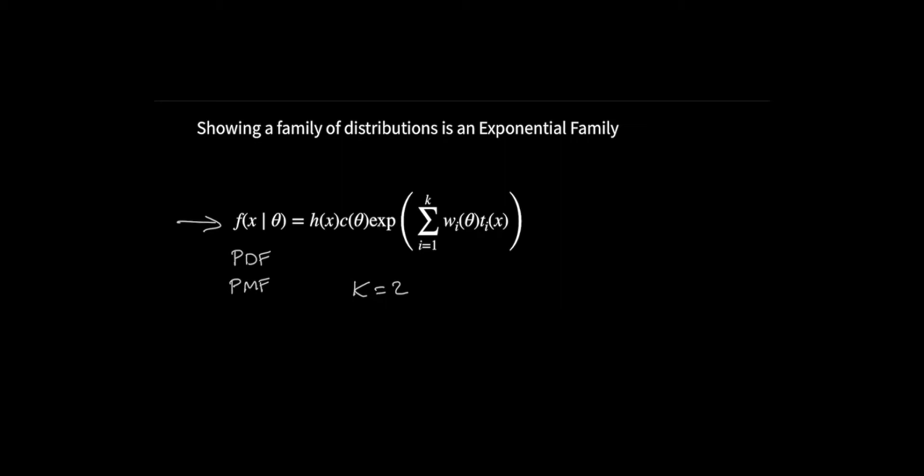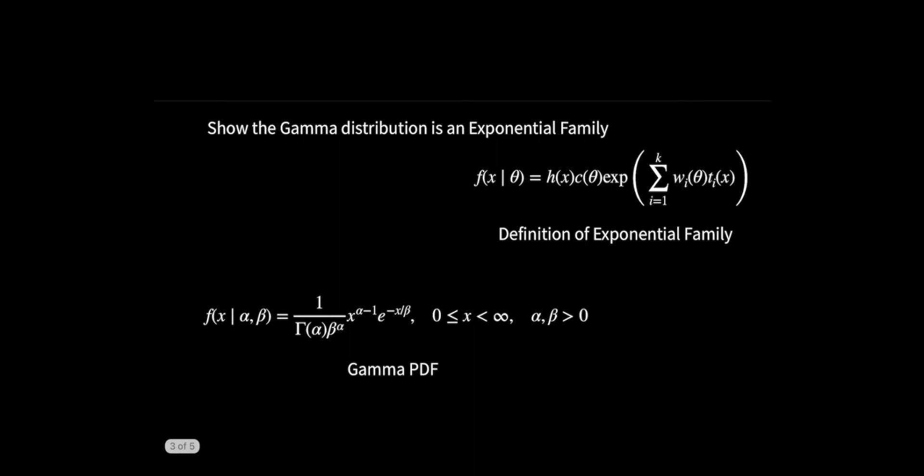For example, if we set k equal to 2, our PDF or PMF would look something like this: a function of X times a function of theta times e to the w1(theta)t1(X) plus w2(theta)t2(X). We're allowed to have as many terms as we want in this sum and it will still be an exponential family.